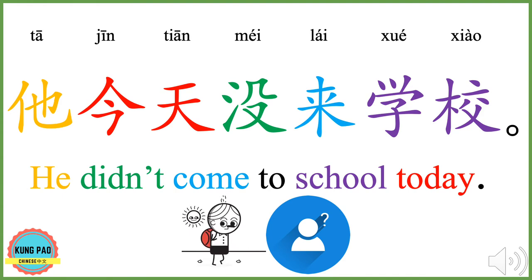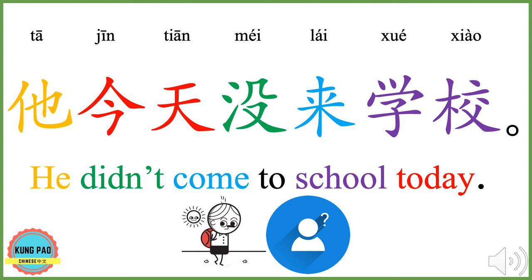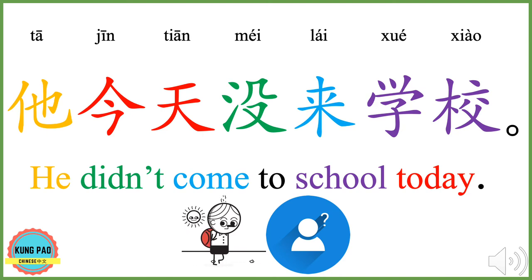他今天没来学校。 他 means he. 今天 means today. 没 here means didn't. 来 means come. 学校 means school. 他今天没来学校 means he didn't come to school today.